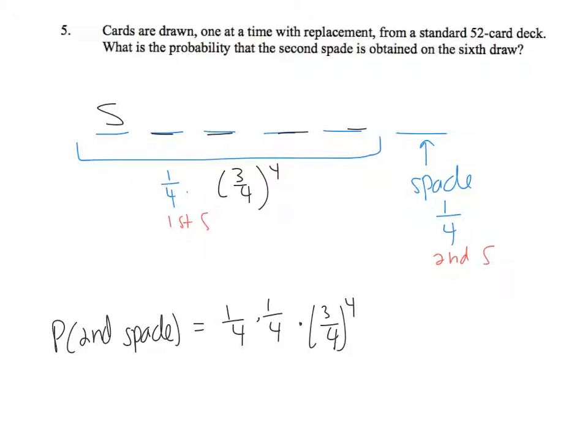Then, one more piece. That first spade could be here, or it could be here, or here, or here, or here. There's 5 options for where that first spade could happen, so I'm going to multiply my answer by 5.